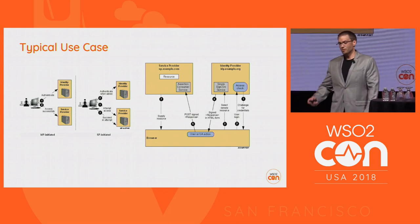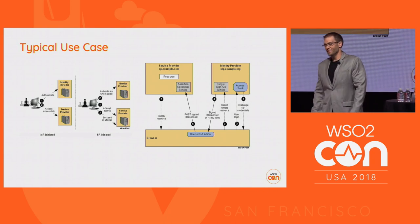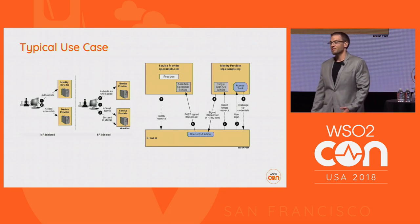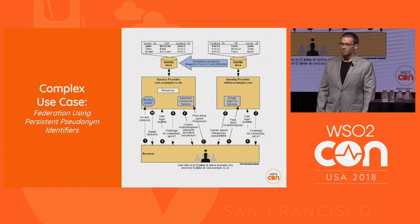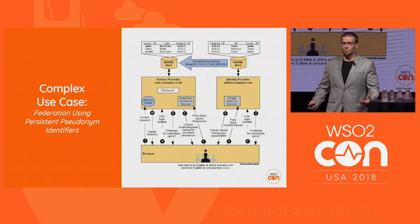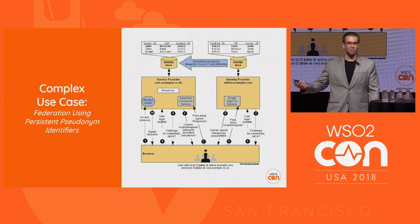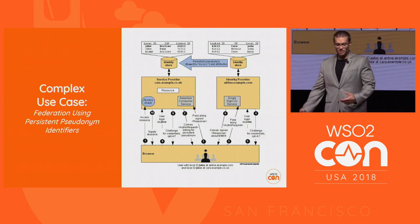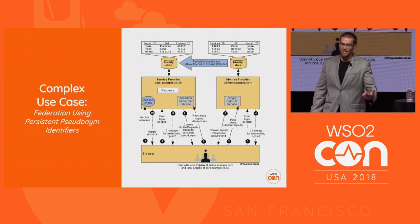These are the typical use cases. I stole the images from OASIS documentation — I was too lazy to create my own. We have the IDP-initiated and the SP-initiated flow, the back and forth and the SAML exchange based on trust. Then the more complicated use case is the federation using persisted pseudonym identifiers. Has anybody done anything like this? Basically you have a registration piece on both sides — you do the account linking and then exchange the ID in between.